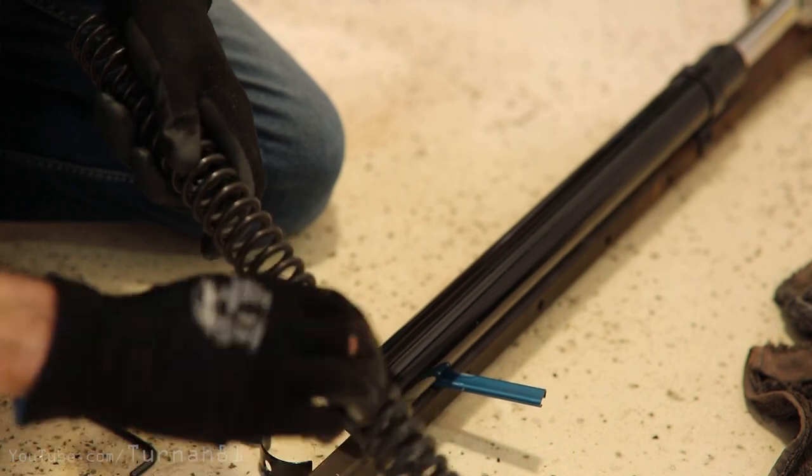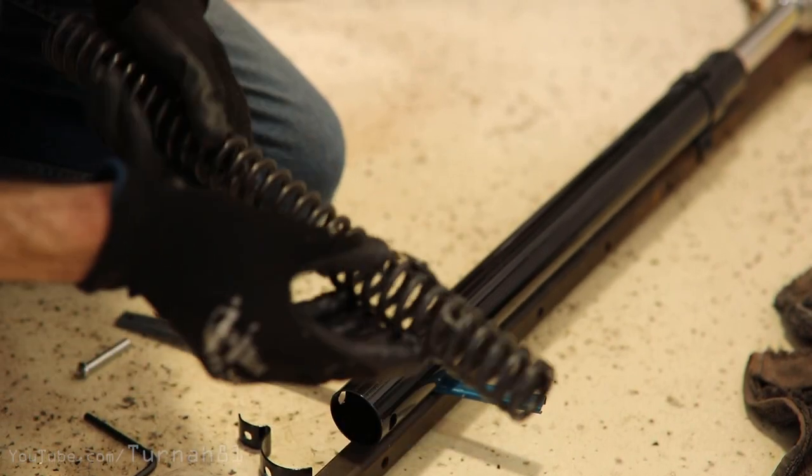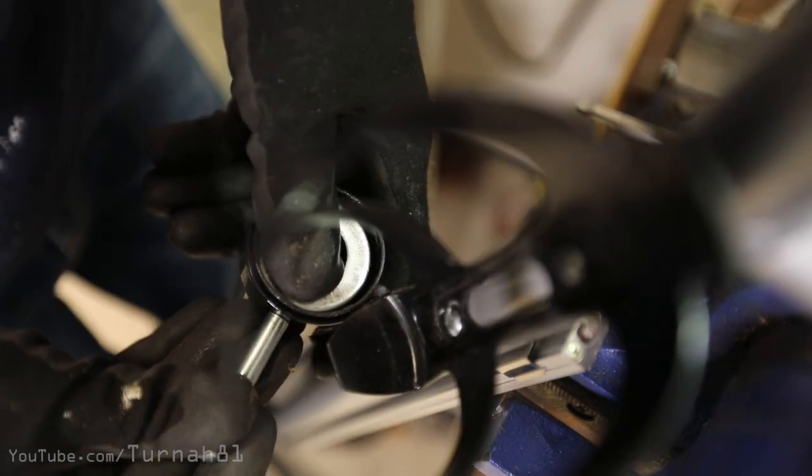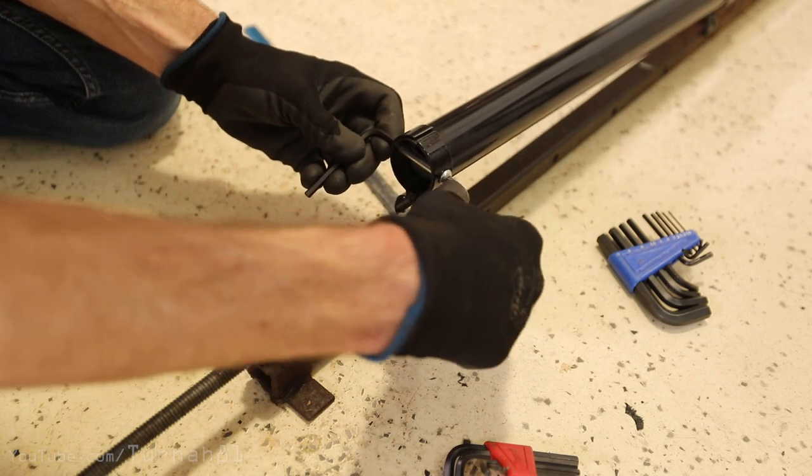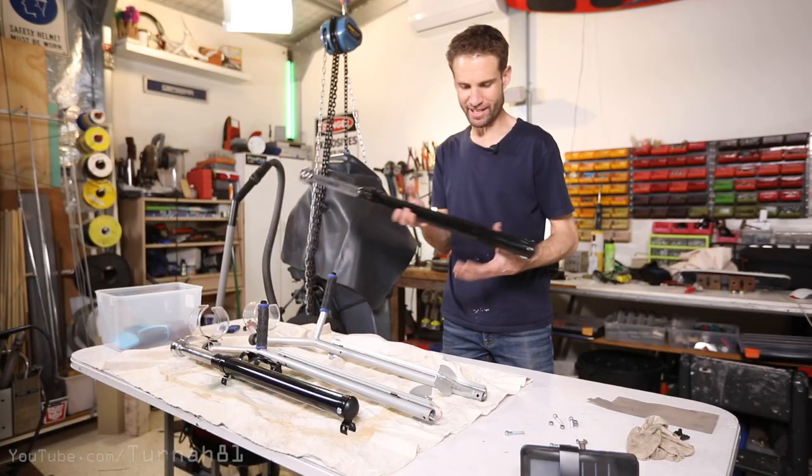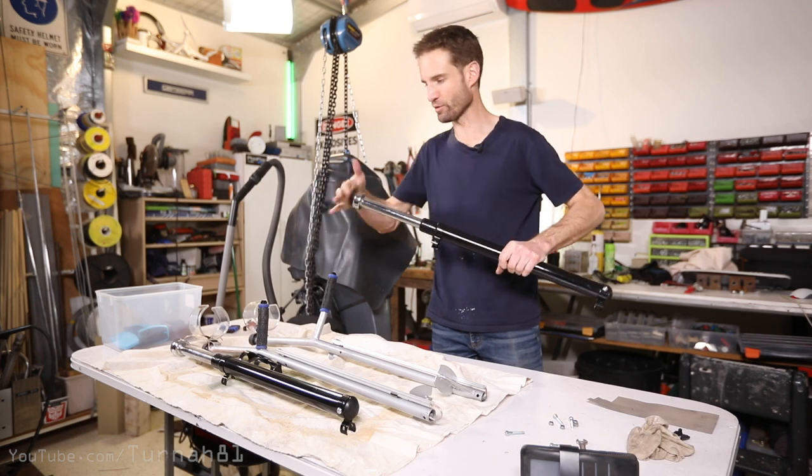It was then finally time to get the springs inserted. I got them greased up and then tried to work out a way to crush them back into the tube. In the end I managed to use a sash clamp to compress them enough to get the bolt through.